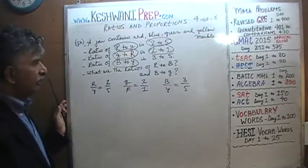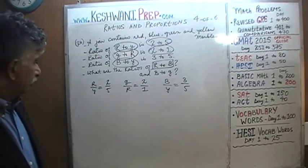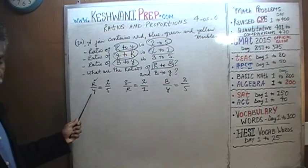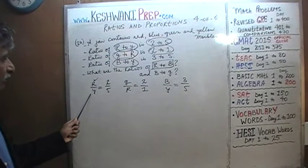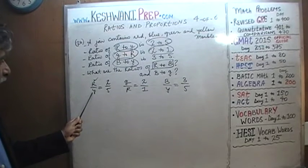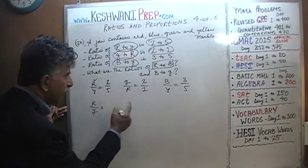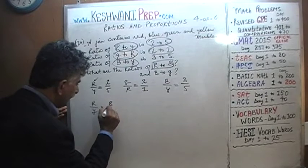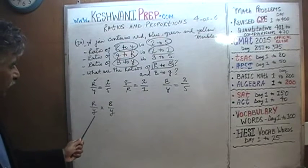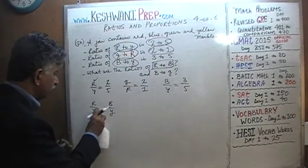What is the question asking? We're interested in red to blue. Looking at our ratios: the first has red but also yellow, so we need to eliminate yellow. We need a ratio containing blue and yellow — and there it is. If we try multiplying red-to-yellow by blue-to-yellow, we get r×b over r-squared, which isn't what we want. So instead of multiplying the two ratios, we will divide them.